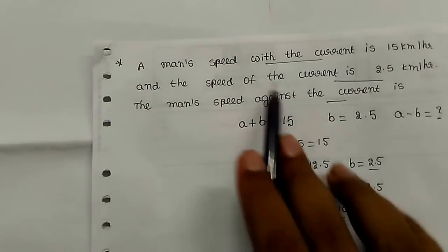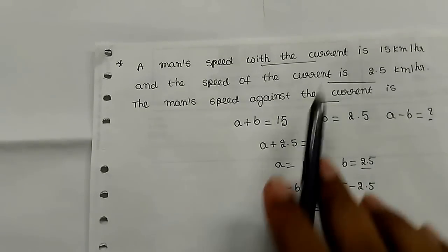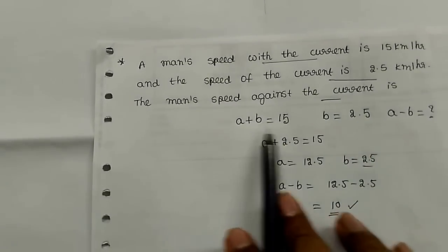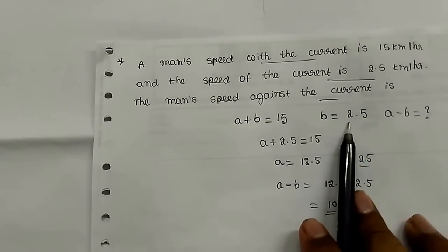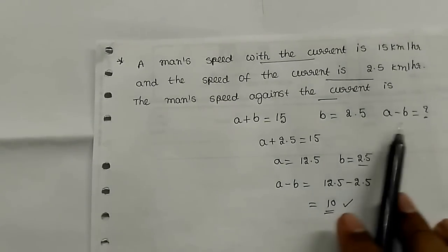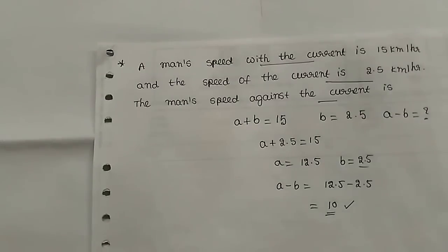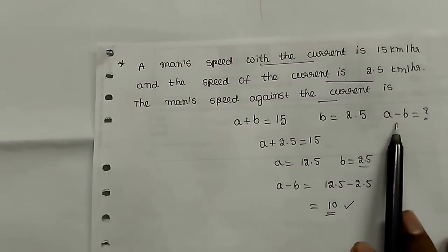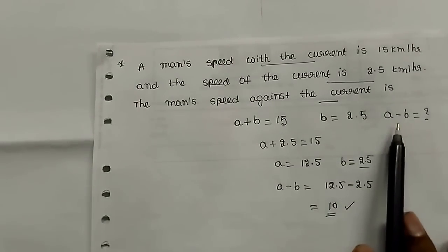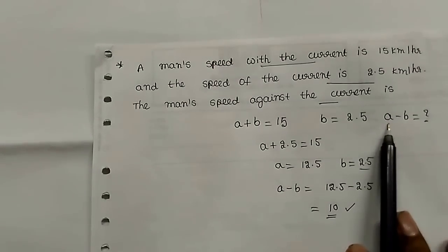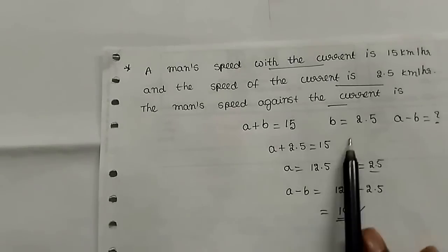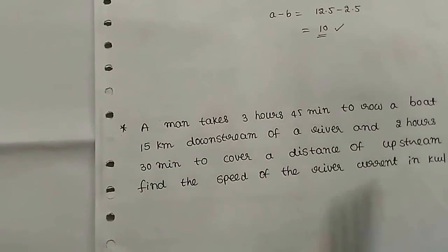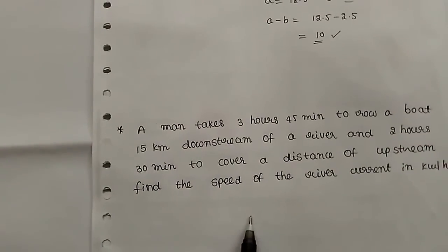A plus b is 15, a minus b is 10. So b is 2.5 — that is the current speed. Again, a minus b is the equation for against the current. Just substitute into the equation.